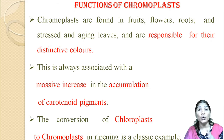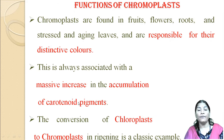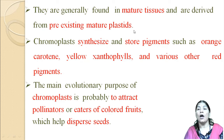The functions of chromoplasts: they are found in fruits, flowers, roots, and senescent leaves, which are responsible for their distinctive color. They are always associated with massive accumulation of different carotenoid pigments. The conversion of chloroplasts into chromoplasts occurs during the ripening of fruit — the chlorophyll pigment is converted into colored pigment, meaning the chloroplast is converted into the chromoplast.